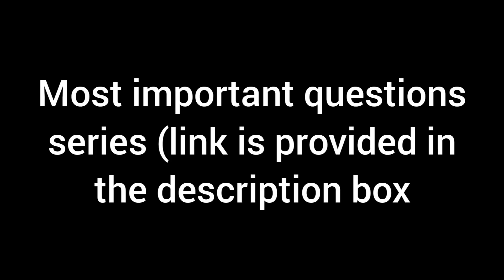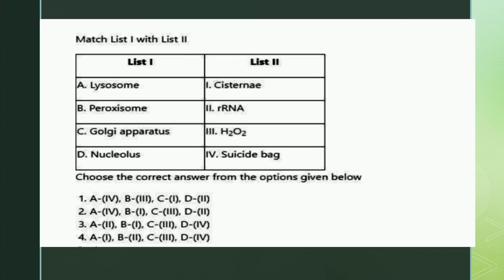Our first question is a match the following. Match list one with list two. List one consists of: lysosome, peroxisome, Golgi apparatus, nucleolus. List two consists of: cisternae, rRNA, H2O2, suicide bag. The right answer is option one: lysosome - suicide bag, peroxisome - H2O2, Golgi apparatus - cisternae, and nucleolus - rRNA.